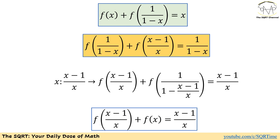To remove that term, I'm going to substitute x with (x-1)/x one more time. Replacing x with (x-1)/x gives us f((x-1)/x) + f(1/(1 - (x-1)/x)), and the right-hand side becomes (x-1)/x. After simplification, this yields f((x-1)/x) + f(x) = (x-1)/x.